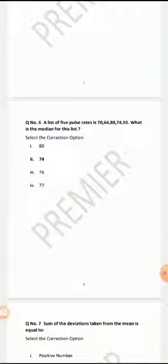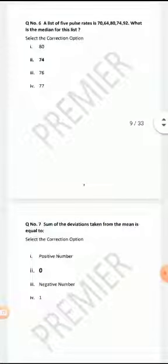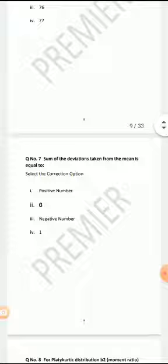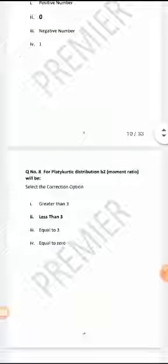A list of five pulse rates is 70, 64, 80, 74, 92. What is the median for this list? The median is 74. Sum of the deviations taken from the mean is equal to zero. The correct answer is zero.